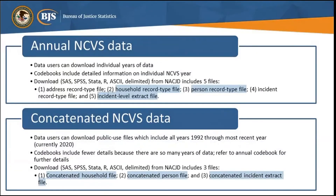There are two options for the NCVS public use data files: annual files and concatenated or cumulative data files. These data files are archived at the National Archives of Criminal Justice Data, or NACJD.